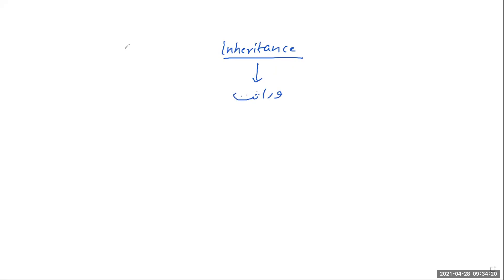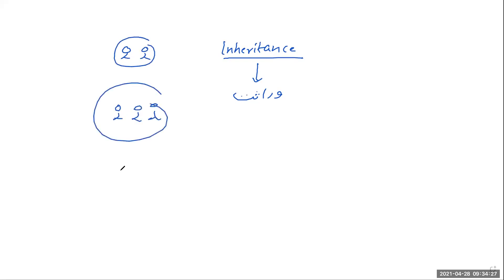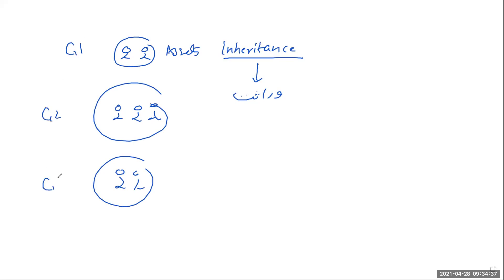In 'virasat,' there are different generations — generation one, generation two, generation three. They have some assets. The assets in generation one are transferred to generation two, then to generation three. Assets can be financial assets or other things. This is the concept of inheritance we have in our real world.